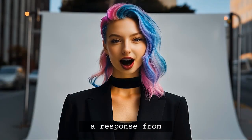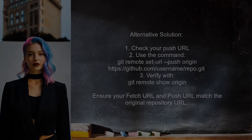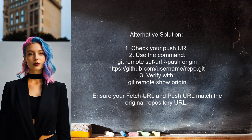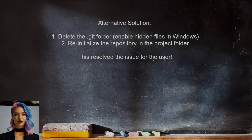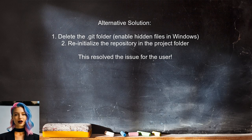Now let's see a response from a different user. One alternative solution comes from a user who faced the same issue — they used a command to reset the push URL to the correct one. Another user suggests deleting the .git folder in your project directory, which you can find by enabling hidden files in Windows. After that, re-initialize the repository in the project folder. This method worked for them and resolved the error.